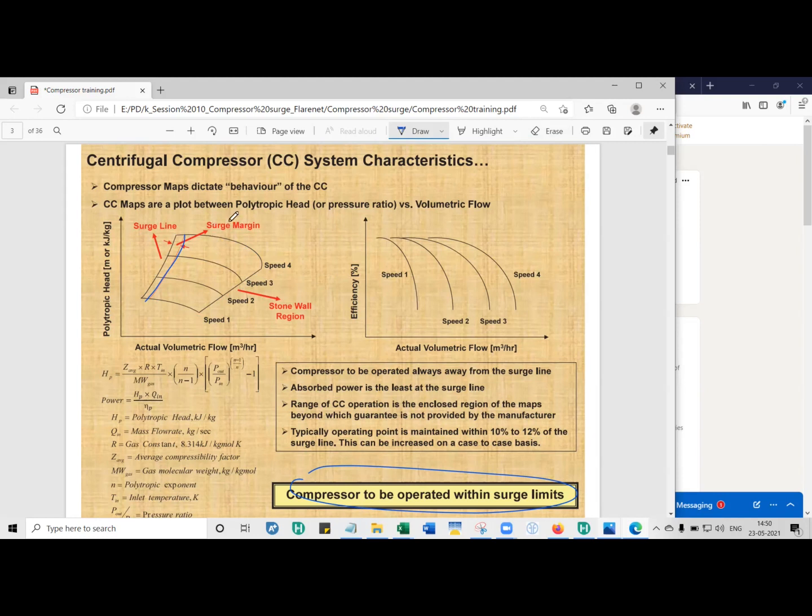So the surge, so I haven't shown here, but in reality, it's called SCL, surge control line. Surge control line is the point where the anti-surge system will kick in and do whatever it takes to pull the compressor out of the surge region. And then on the other end, you have what is called SLL, surge limit line. No matter what happens, you're never meant to cross the surge limit line.